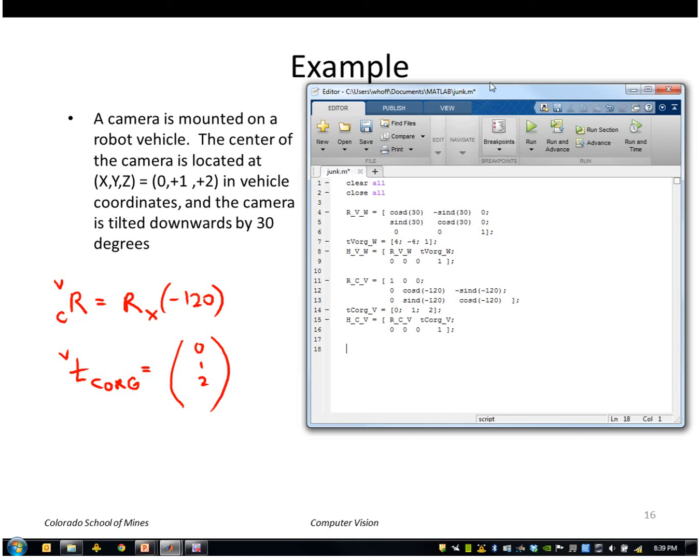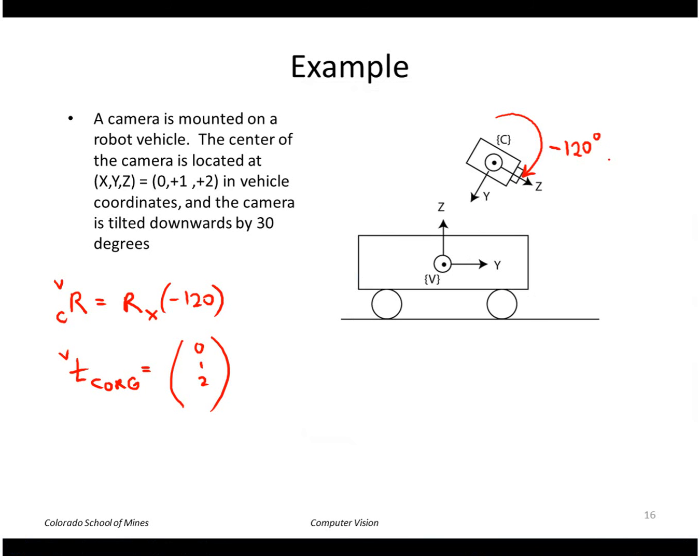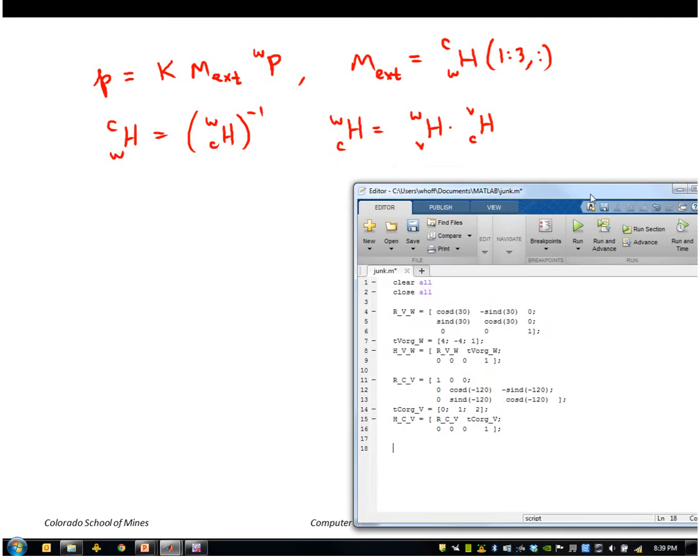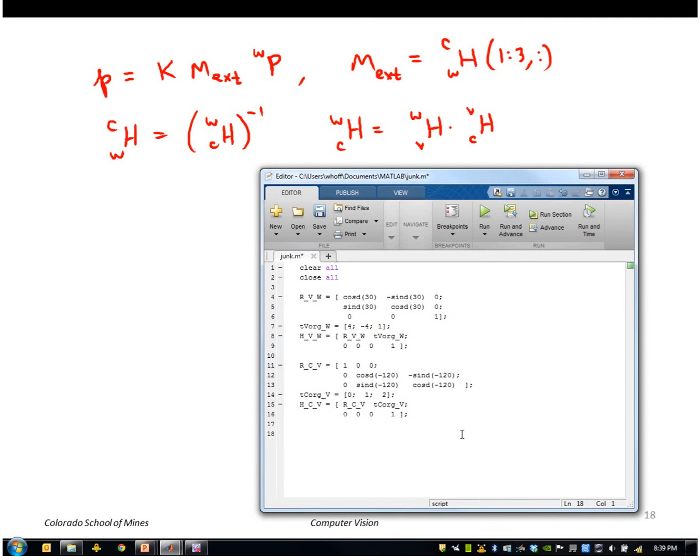So now I'm ready to go ahead and composite those by multiplying to get the camera to world. I can do that by taking vehicle to world times camera to vehicle. And then I'm going to need to take the inverse of this because what I really want is world to camera.